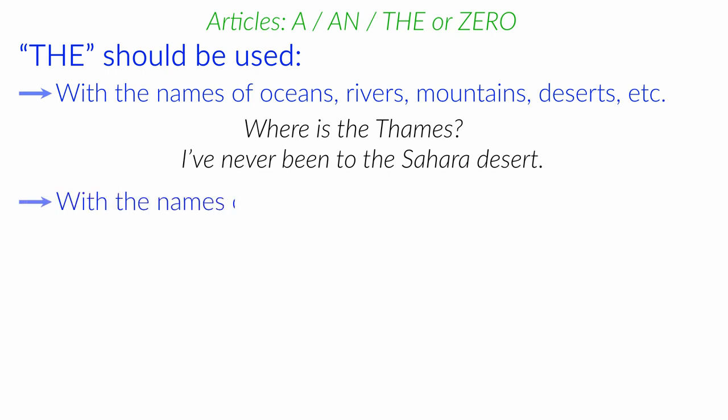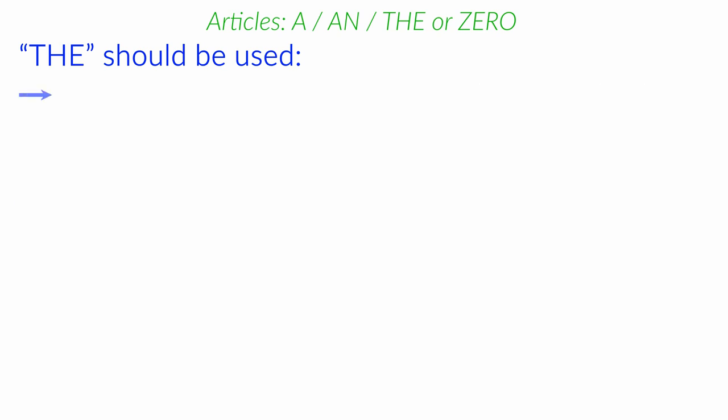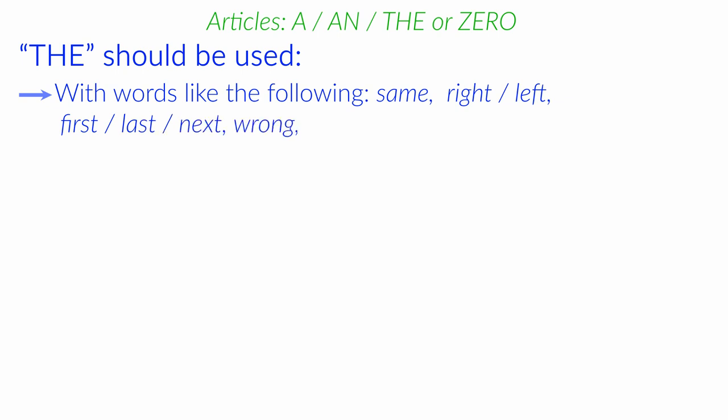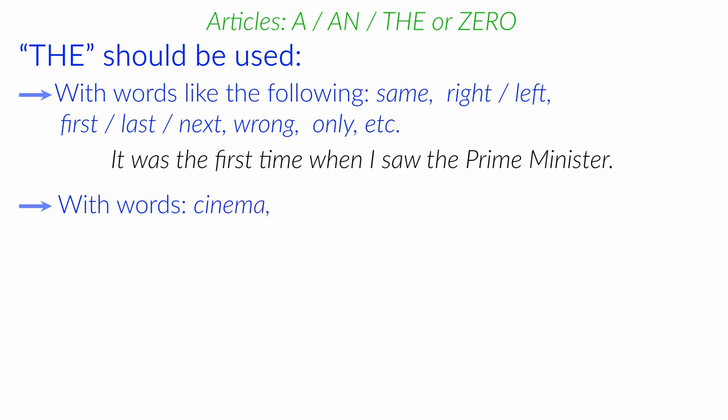With the names of musical instruments. For example, I play the piano. We use the article the with words like the following. Same. Right. Left. First. Last. Next. Wrong. Only. For example, it was the first time when I saw the Prime Minister. With words cinema, theatre, when indicating a location. I have never been to the theatre.